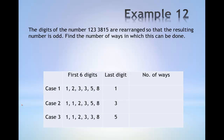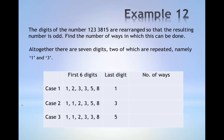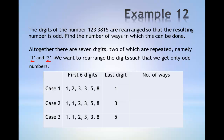First of all, there are 3 possible cases to this question. There are altogether 7 digits, 2 of which are repeated, namely 1 and 3. We want to arrange the digits such that we get only odd numbers.